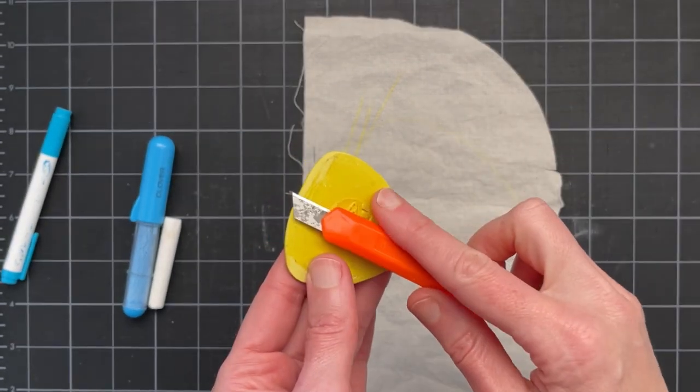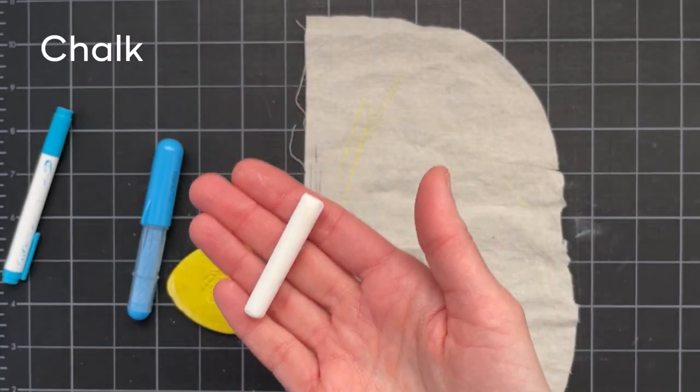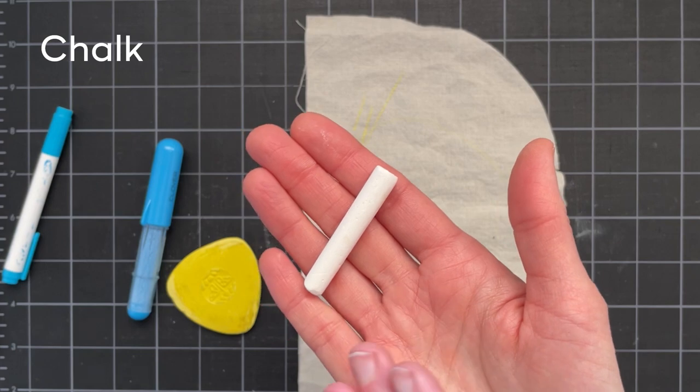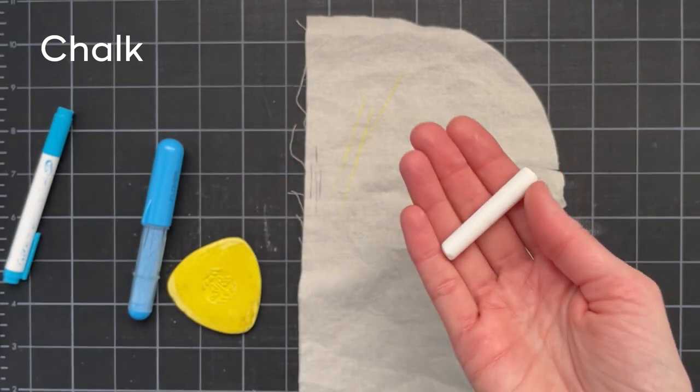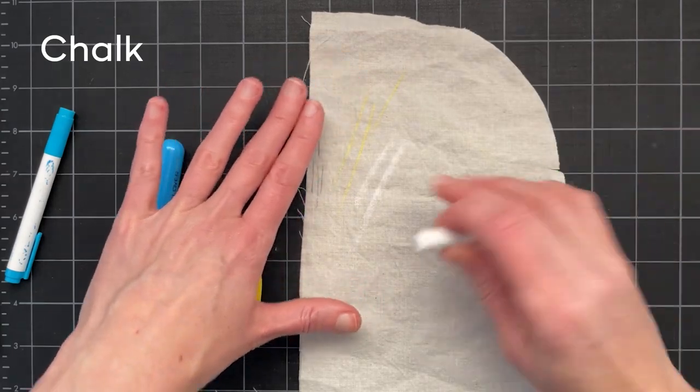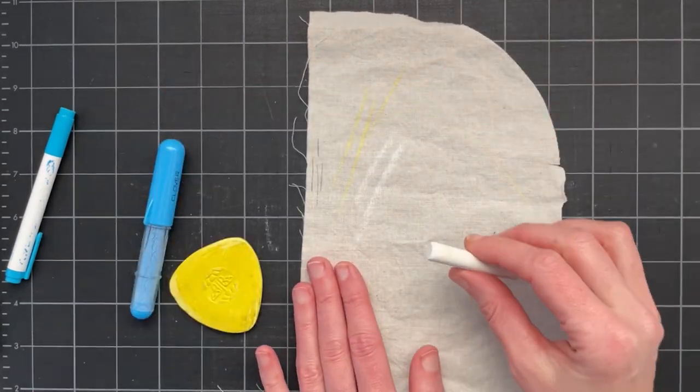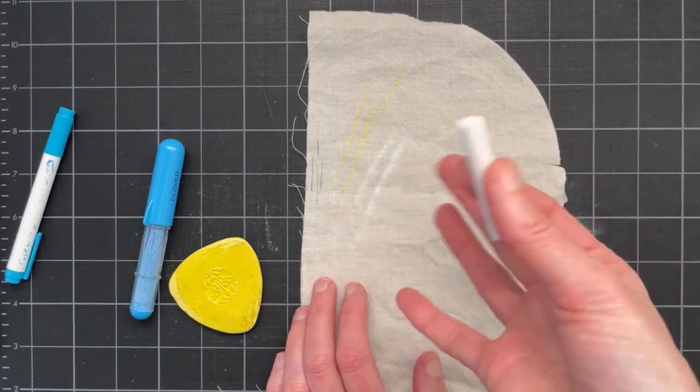This is just a regular piece of chalk. I love using chalk like this because it's super affordable and it works really well and it also rubs away pretty easily. If you can't rub it away with your fingers it should come away with water, but again test it.